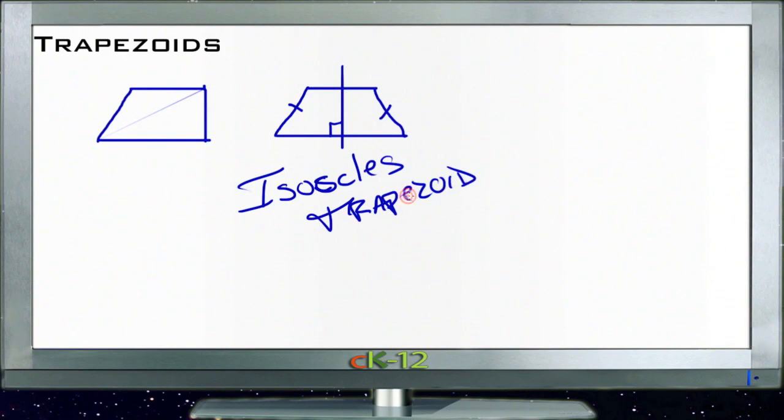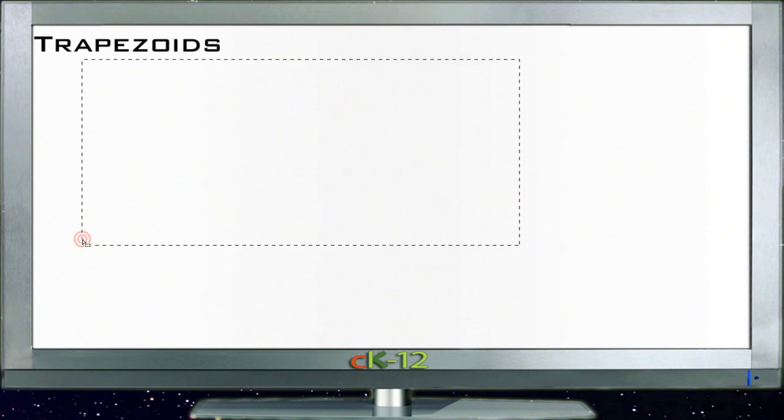If it's an isosceles trapezoid, there are a number of other things about it that are important to know. If it's not an isosceles trapezoid, all that really matters is that the top and the bottom are parallel to each other. Let's make a little bit bigger isosceles one here so we can see what we're doing more easily.